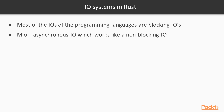Almost all the IOs of most programming languages are Blocking ones, as they wait until the sent data is received by the receiver. However, to resolve this problem, Rust has an asynchronous IO which works like a non-blocking IO. That's known as Mio.